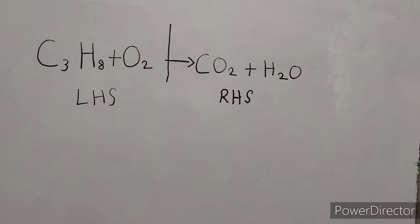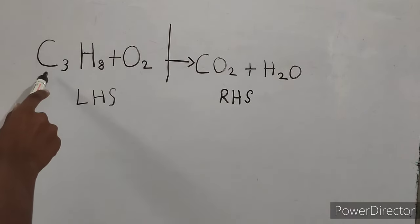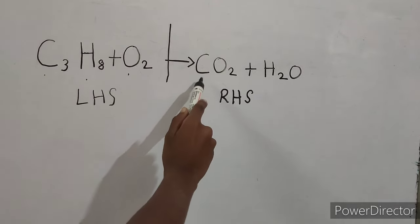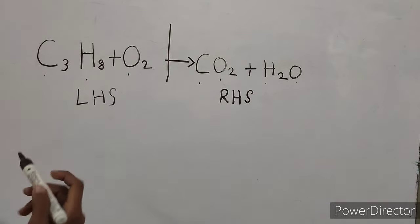The second step is to see the elements and then write them down. So here carbon is there, hydrogen and oxygen. There's carbon, oxygen, hydrogen, oxygen. So write down the elements.